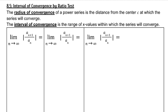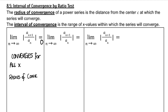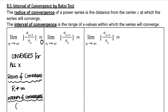Our first scenario is if the ratio test gives us a value of 0. If your ratio test gives you a value of 0, then your power series converges for all x. This would make our radius of convergence infinity, so our interval of convergence is negative infinity to infinity. This means that x can be any number and the series will still converge.